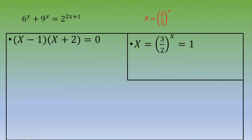So capital X equals 3 over 2 power x equals 1, which means x equals 0. So one solution is x equals 0.